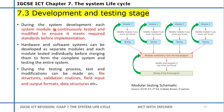The system model is continuously tested and modified to ensure it meets required standards. You could have module one: modify it, test it, go back. Once you validate that module is working, go to module two, modify and test, then module three — just like that. At the end you combine all modules and test the whole system. After testing, if you find a problem you go back, optimize, redesign — this is modular testing — until you achieve the desired performance for your system.